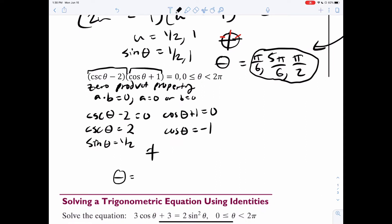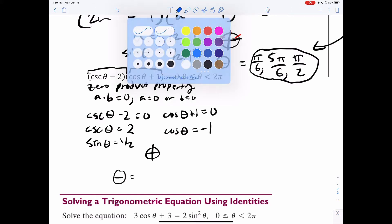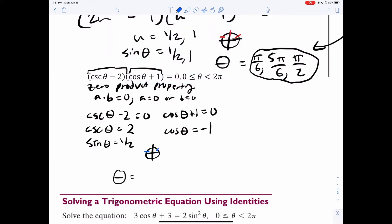You can draw your circle here. Sine is half here and here. Cosine is negative one right there. So we have pi over six, five pi over six, and pi.